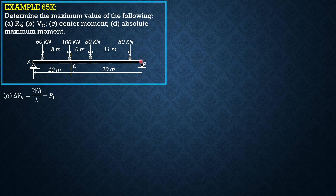Next, we move the loads so that the next 80 kN load will be over B. W would be 80 plus 100 plus 60 — the loads that remain on span — which is 240. H is 11, divided by L which is 30, then minus P1 which is 80. So delta V equals 240 times 11 over 30 minus 80, and the sign is still positive.